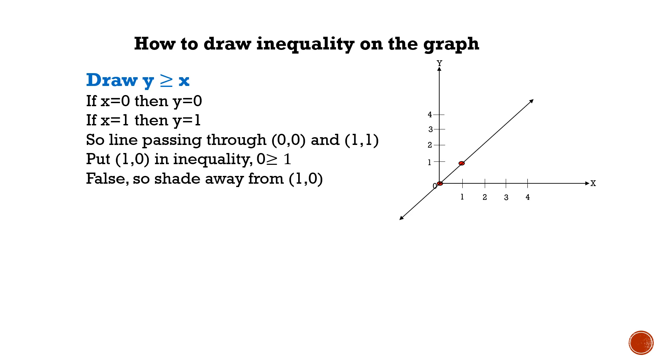Put the point (1, 0) in the inequality. x is 1 and y is 0, so 0 greater than or equal to 1, which is false. So shade away from (1, 0).